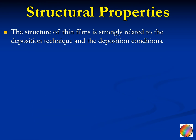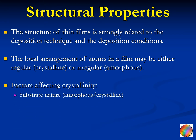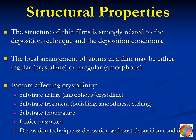The structure of thin films is strongly related to the deposition technique and the deposition conditions. The local arrangement of atoms in a film may be either regular (crystalline) or irregular (amorphous). Factors affecting crystallinity include the substrate nature — whether it is an amorphous substrate like glass or a crystalline substrate like a silicon wafer — the substrate treatment, the substrate temperature, any lattice mismatch between the substrate and the film, and the deposition technique itself including deposition parameters and post-deposition conditions.